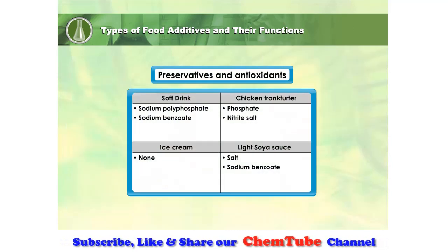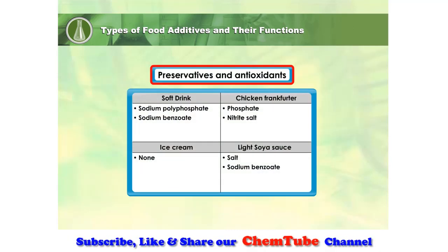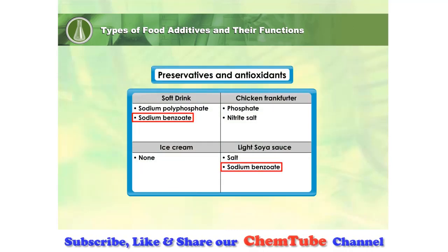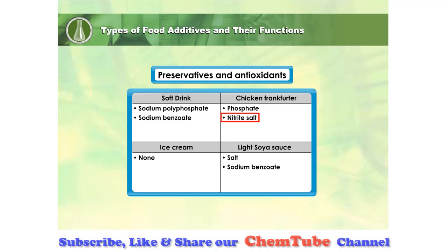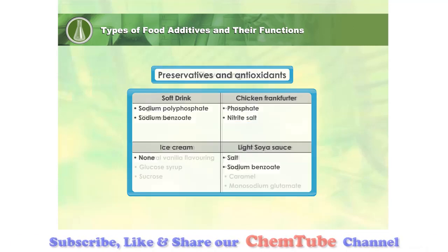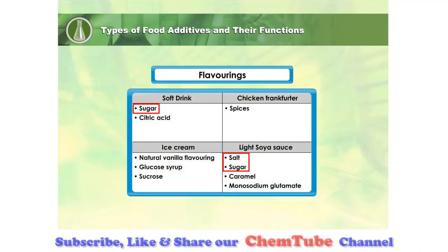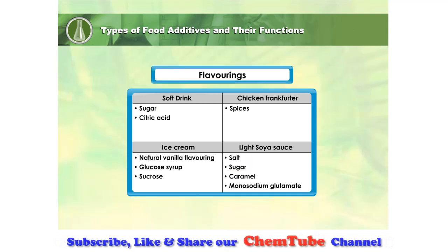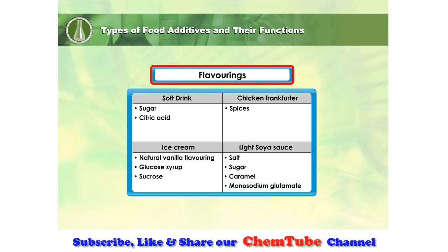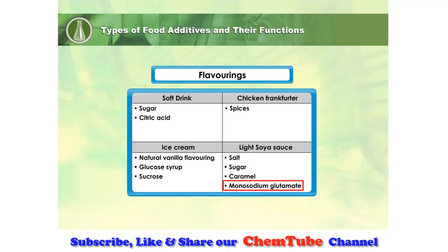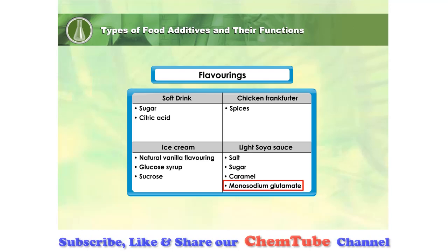Some examples of preservatives are Sodium Benzoate, Sodium Nitrite and Salt. Sugar and Salt are examples of natural flavoring. Monosodium Glutamate is an example of a synthetic flavoring.